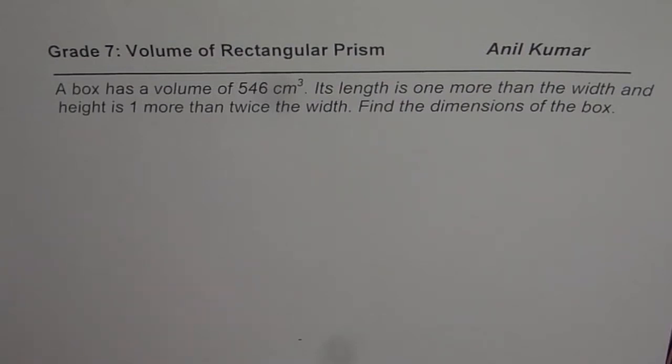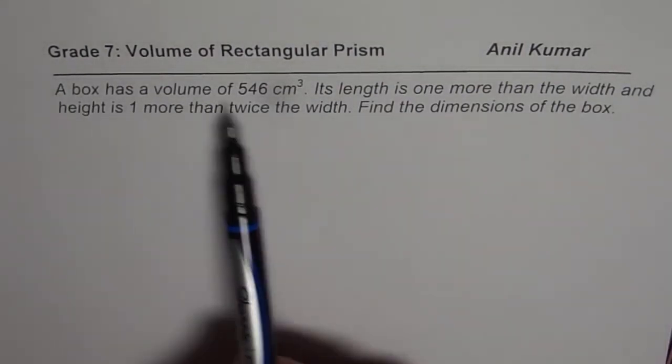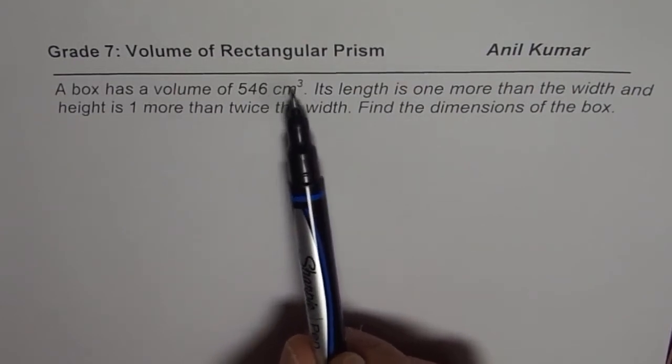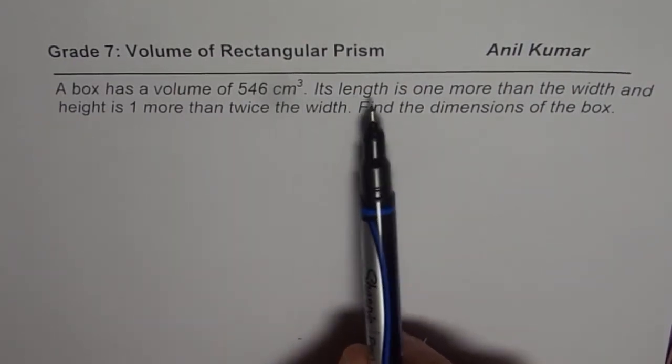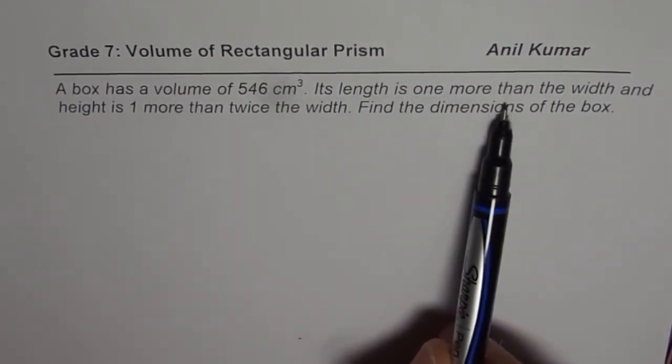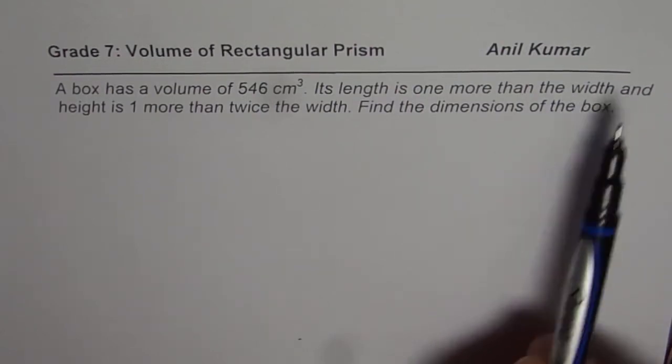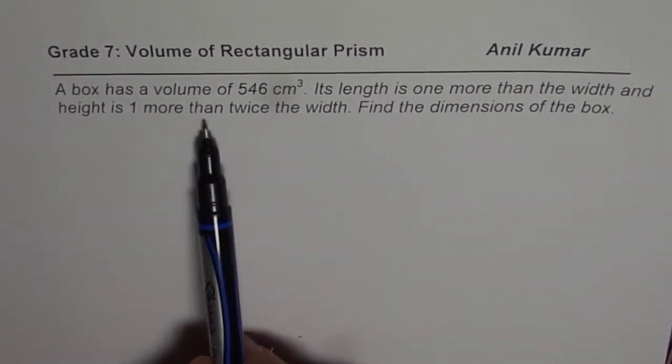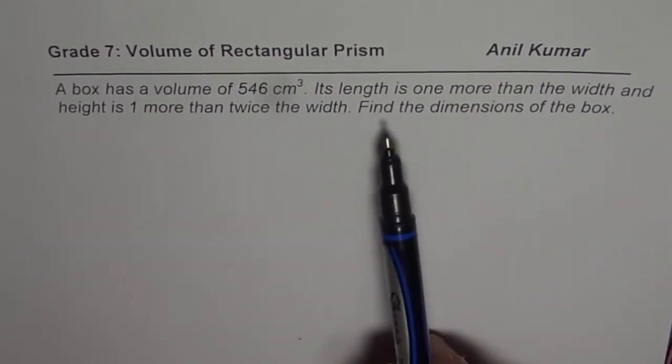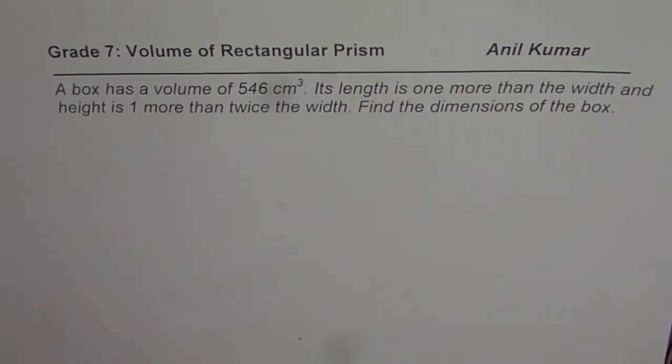The question here is: a box has a volume of 546 cm³. Its length is one more than the width and height is one more than twice the width. Find the dimensions of the box.